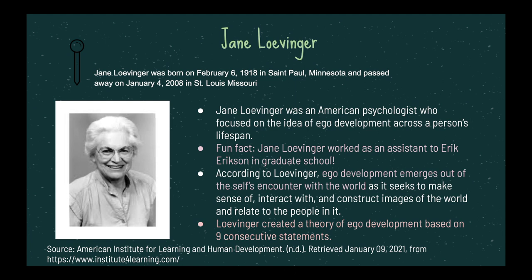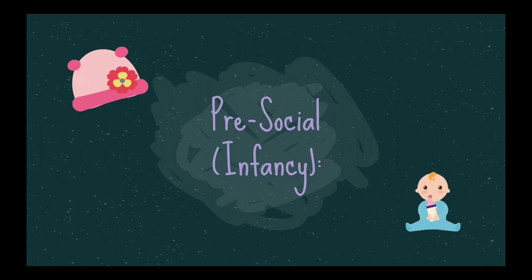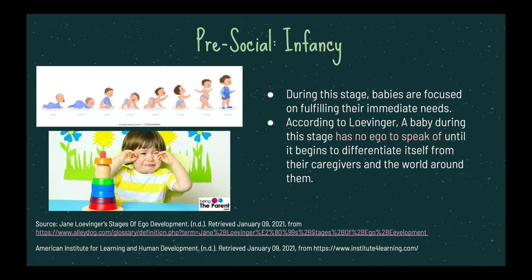The first stage is called pre-social infancy. The pre-social stage that occurs during infancy is more focused on the baby's immediate needs such as hunger, needing to use the restroom, and sleep. According to Loevinger, a baby during this stage has no ego to speak of until it begins to differentiate itself from those around them, and specifically their caregivers.